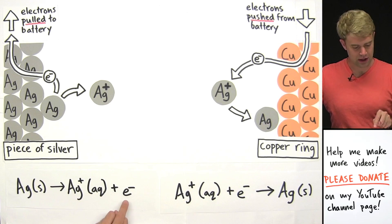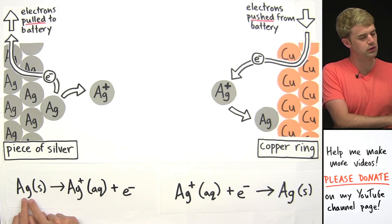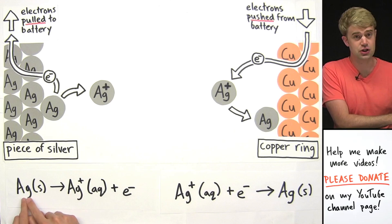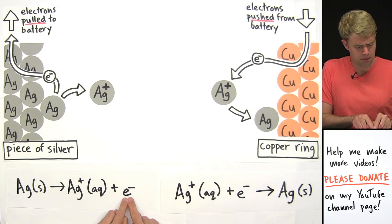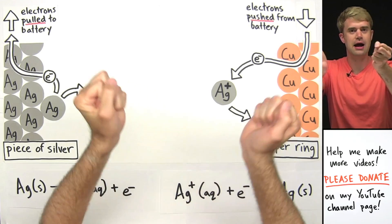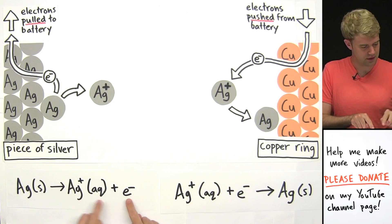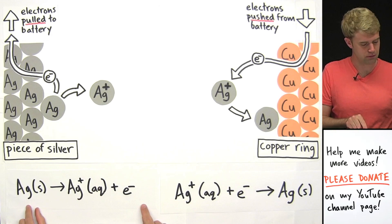Putting the E minus over here shows that it's no longer part of the Ag here. So it's like putting it here shows that it's now coming apart, that it's not part of it anymore.